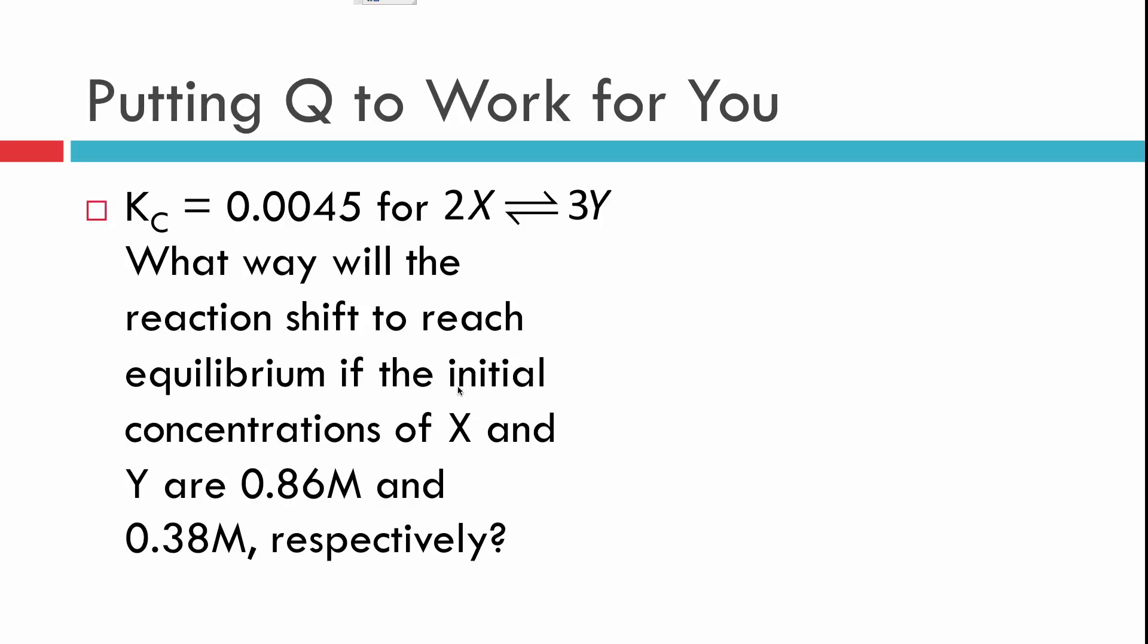According to the initial data, this is not equilibrium information. This is the concentrations of these chemicals when they were mixed. So when we did the mixing, we had 0.86 molar of X and 0.38 molar of Y. So the first thing we're going to do, we're going to calculate Q. And we find that Q is 0.00742, and that is larger than K.